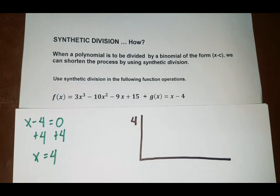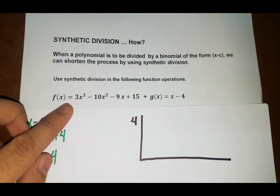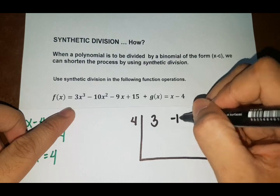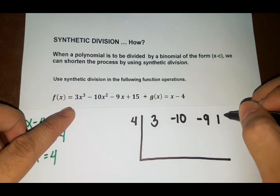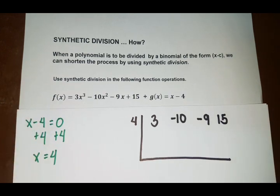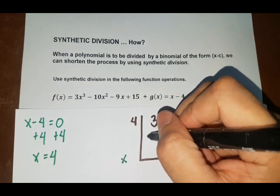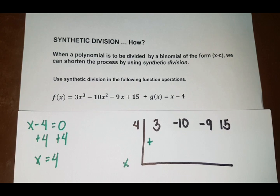Next, the next step is you should get the coefficients of the given polynomial functions. So we have 3, negative 10, negative 9, and 15. Okay. Next step, so I want you to write multiplication sign here and addition sign here.